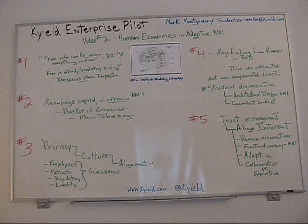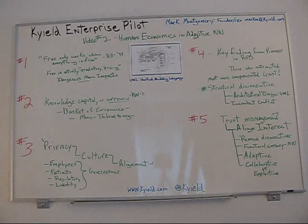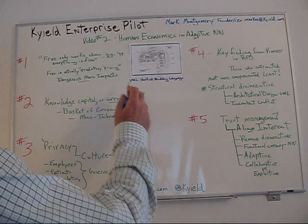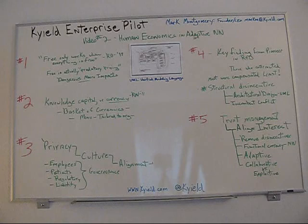Video number two: Human Economics and Adaptive Neural Networks. This is a big area that we did not have time to cover in the previous video, and it warrants its own special time and focus. This is the UML — unified modeling language — diagram of K-Yield Enterprise, actually demonstrating the schematics of the system.